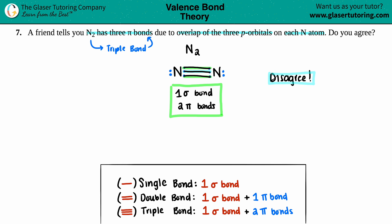Okay, so the answer is I disagree, and it's because it's not three pi, it's one sigma and two pi bonds. And there you go. What'd you think? Hopefully this helped. Let me know in the comments. Subscribe to the channel.